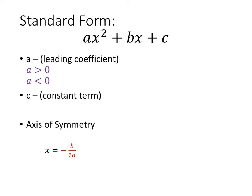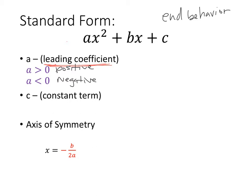Most of us remember using a, b, and c and talking about the shapes of graphs when we did things like end behavior — whether it was pointing up or down. We're going to use that again when we look at the leading coefficient. Our leading coefficient will always be a, and really there are only two options: when a is greater than zero, it's positive; when a is less than zero, it's negative. That tells us whether our end behavior is up-up or down-down.